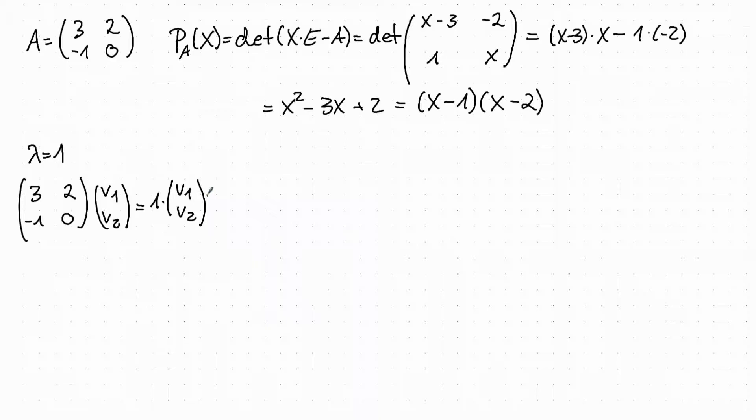This gives us a system of linear equations which is just 3v₁ plus 2v₂ equals v₁ and minus v₁ equals v₂.